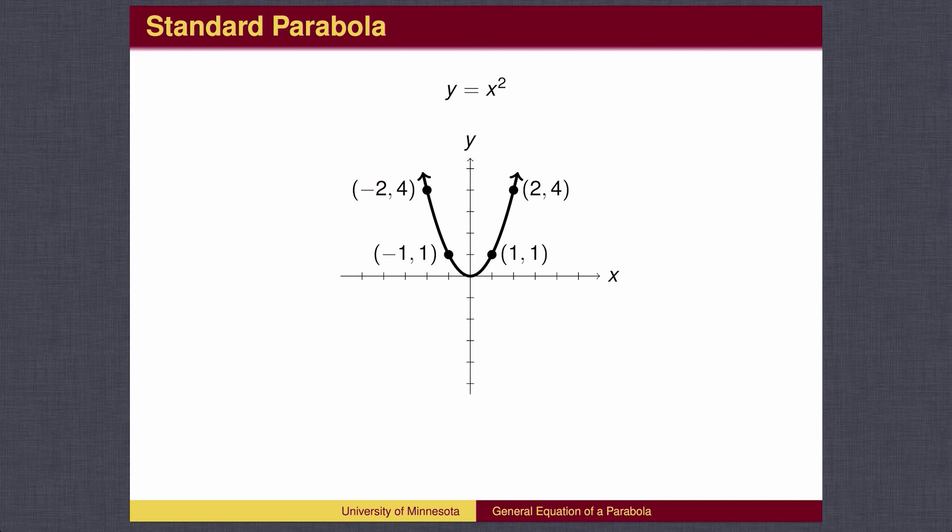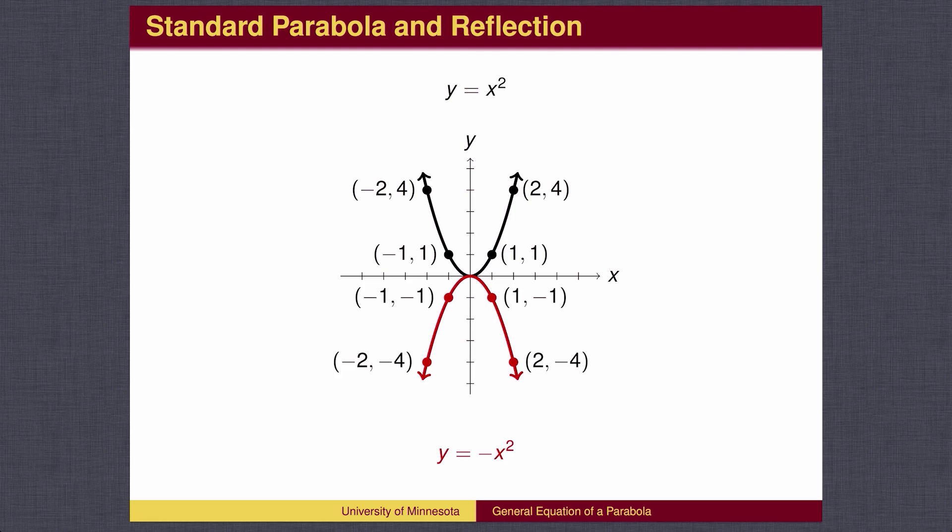We can now perform the standard transformations of graphs. First, we can reflect the graph across the x-axis by placing a negative in front of the x squared. The red parabola has negative values for the y-coordinates.